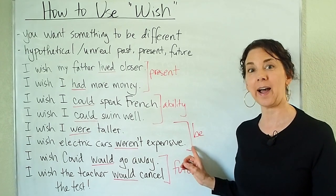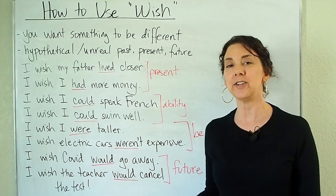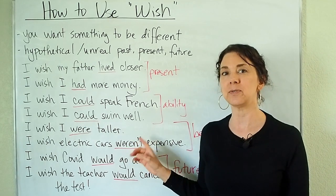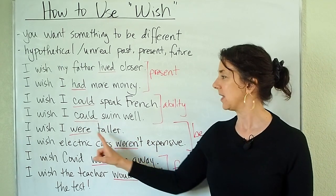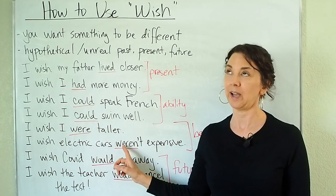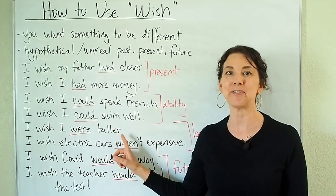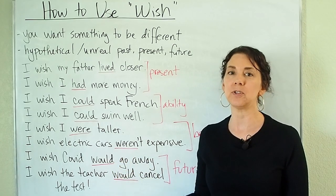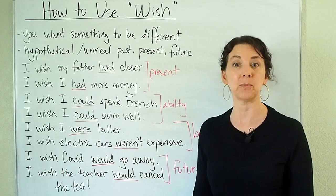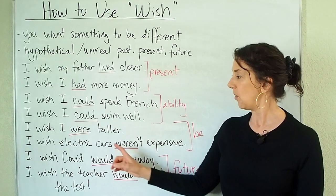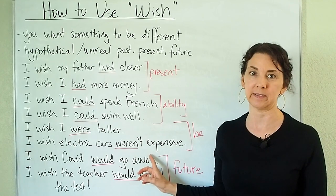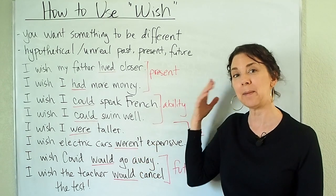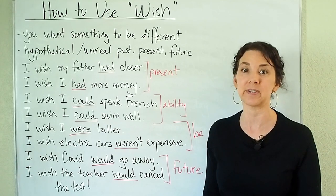Now, notice when you use the verb be, you have to change that to were. And you may know another similar form: if I were you — this is the same idea. We have to use the verb were for this conditional. For example: I wish I were taller. Am I going to be taller? No — this is never going to change, but I wish it were different. Sometimes you may hear people use was, but the grammar tells us that we should use were for this conditional. Or: I wish electric cars weren't expensive. So they are expensive and there's nothing I can do to change that situation, but I wish it were different.